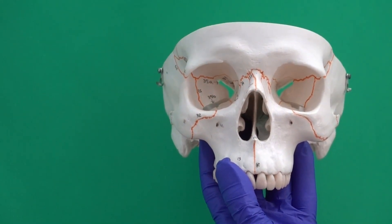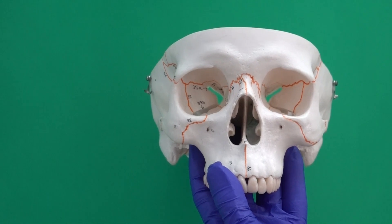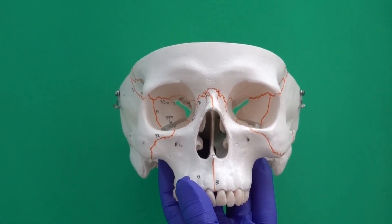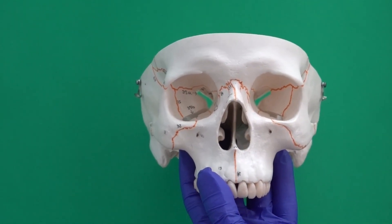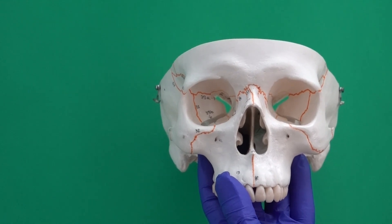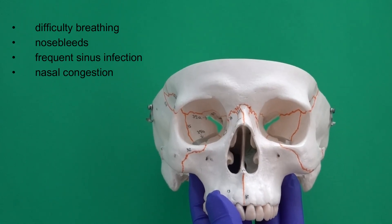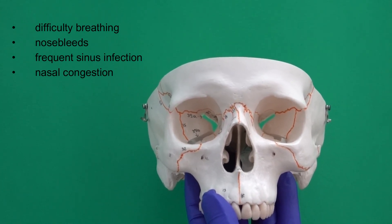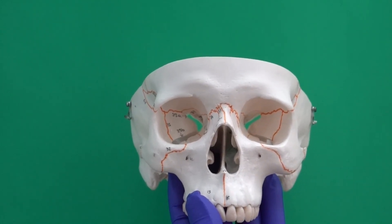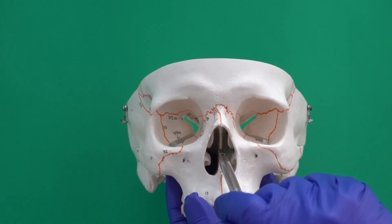Even though in this skull the nasal septum appears exactly in the middle, in 80% of the population we have nasal septum deviation, meaning the septum is slightly deviated to either the right or left side, making one nasal space smaller than the other. In mild and moderate cases, medication is used to manage signs and symptoms such as difficulty breathing, frequent nosebleed, sinusitis, and nasal congestion. In severe cases — where one space is extremely narrow or blocked — surgery is needed to correct the location of the nasal septum.